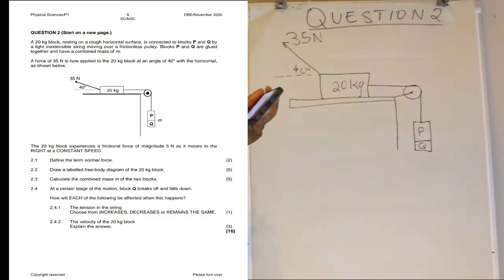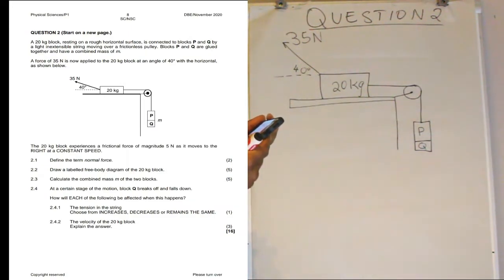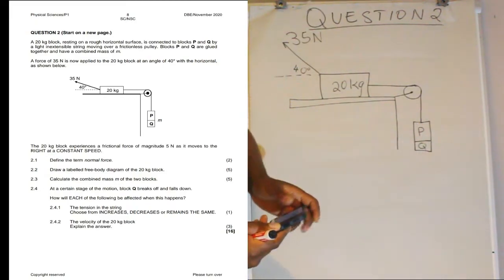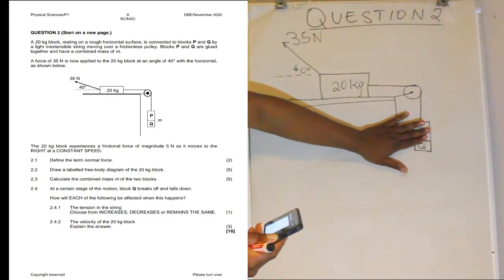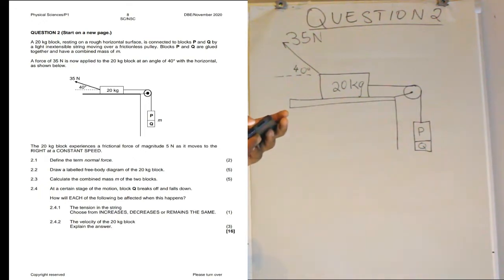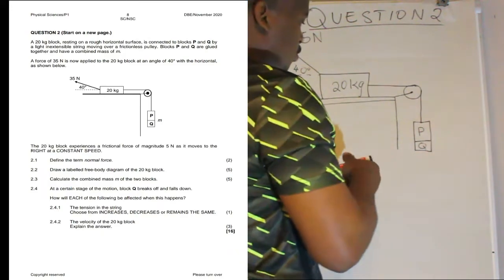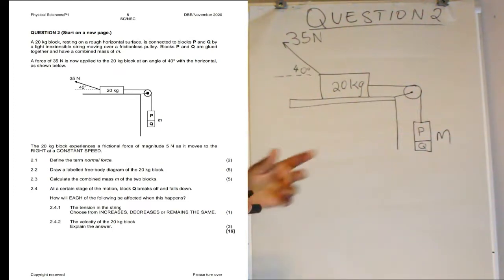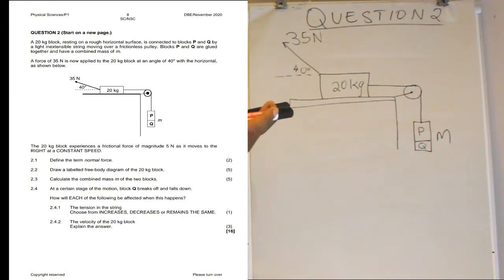Blocks P and Q are glued together, so these two blocks were originally separate but have been joined using glue. They have a combined mass M, meaning after being glued together their total combined mass is M. The problem states that a force of 35 newtons is applied on the 20 kg block.